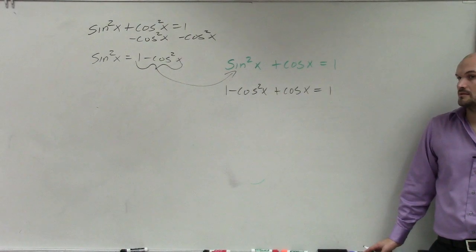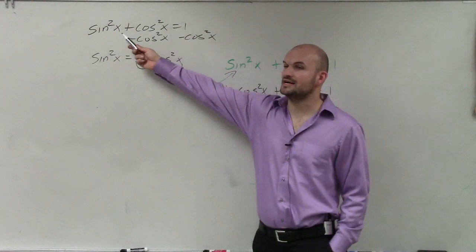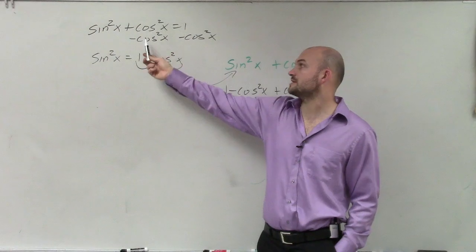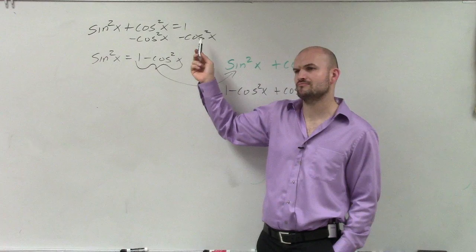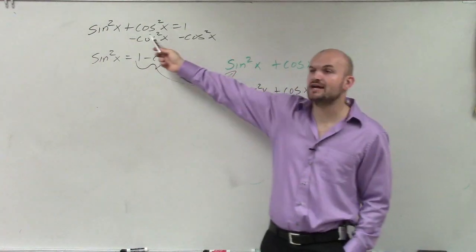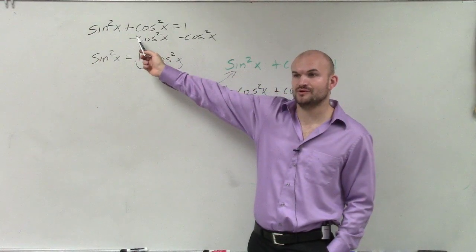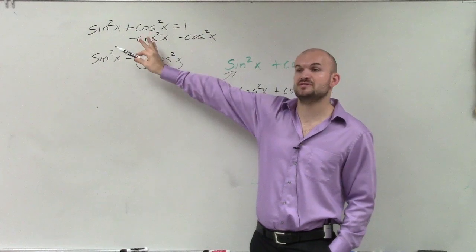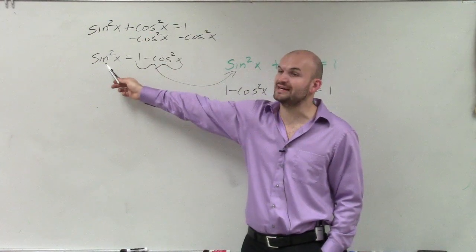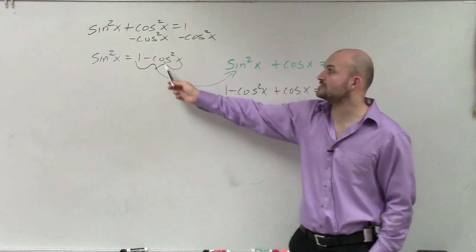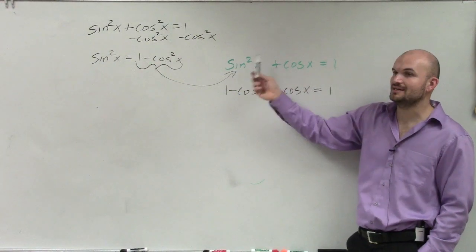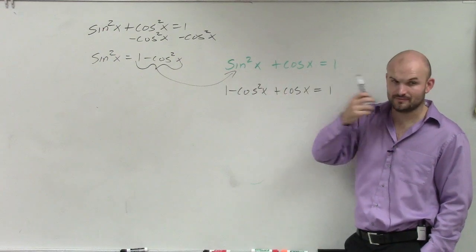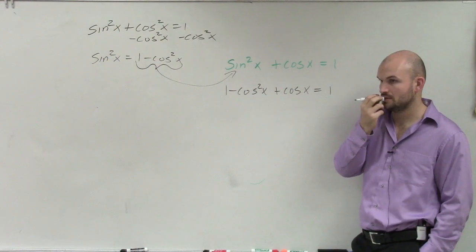Sine squared plus cosine squared equals one. So I subtracted cosine on both sides. That's the Pythagorean identity on page 354. I used that Pythagorean identity to rewrite what sine squared equals. So now, I know sine squared equals one minus cosine squared. So I'm substituting in sine squared by applying my Pythagorean identity.